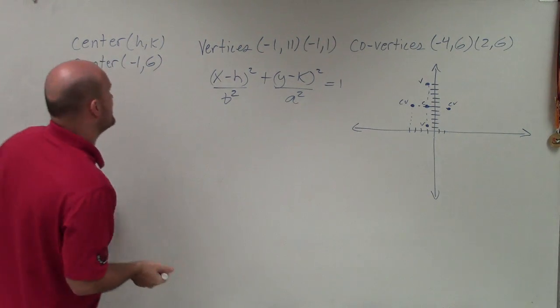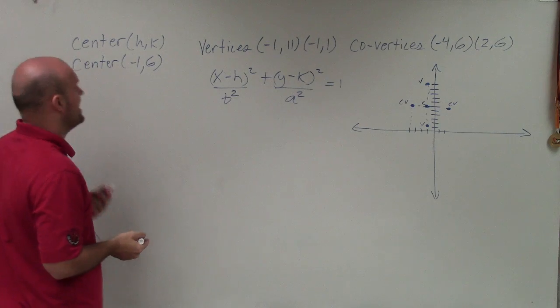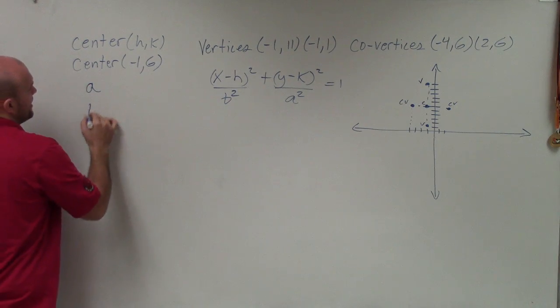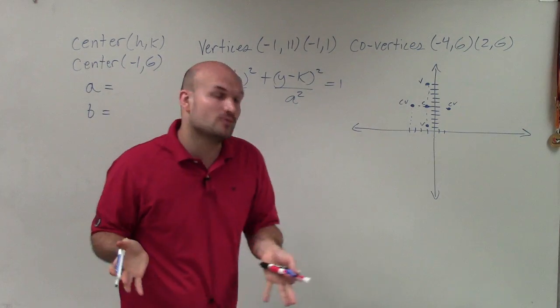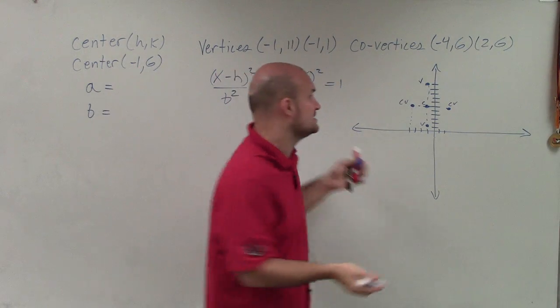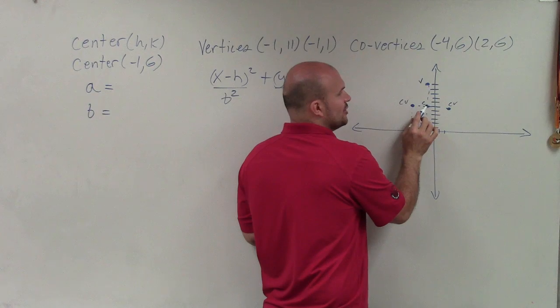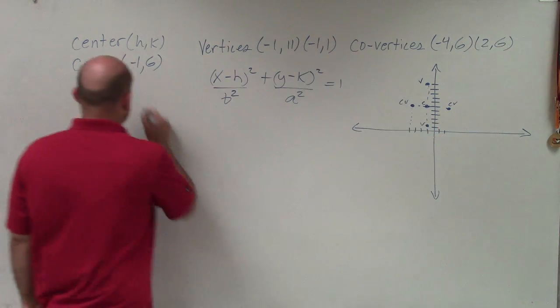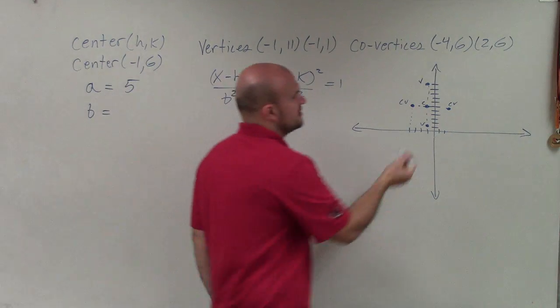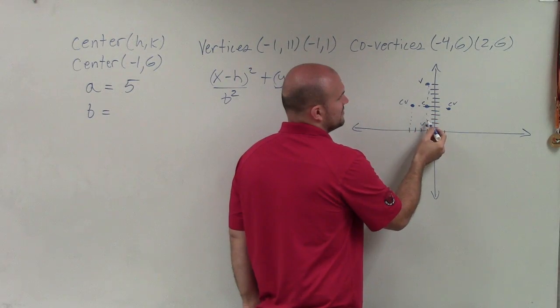Before I enter those in, let's go ahead and figure out what my a and b are going to be. Now remember, a is equal to the distance from the center to either one of the vertices, and it's an absolute distance. So going from my center up to my vertices, that's 5. So therefore, a is 5.